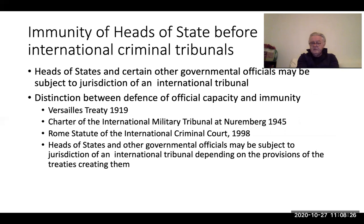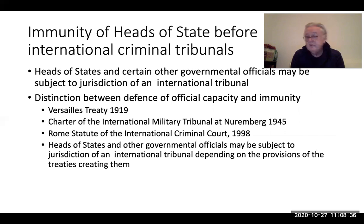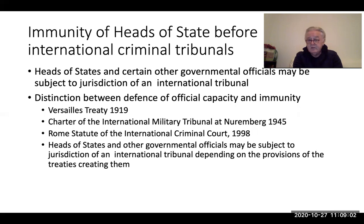Turning now to the immunity of individuals: one category that is particularly protected under international law is heads of state. This is sometimes extended to certain government officials — for example, the foreign minister, who needs immunity because they must travel and participate in negotiations. It is less clear whether a minister of sport would enjoy the same immunity, and there remains uncertainty about how broad individual immunity is.